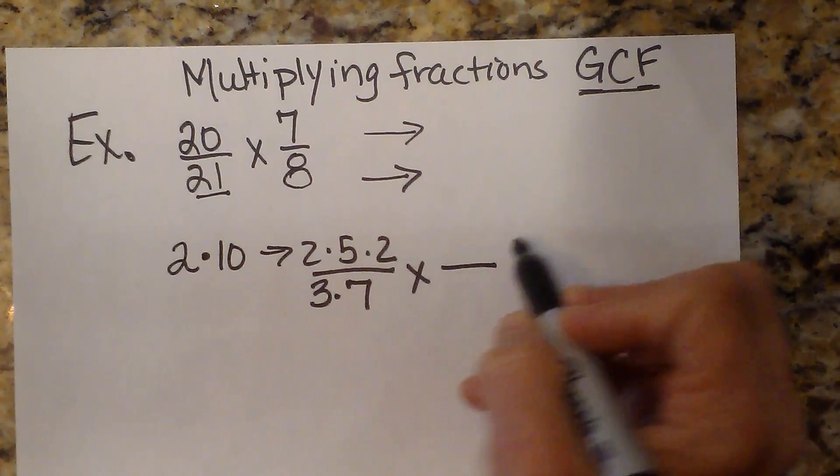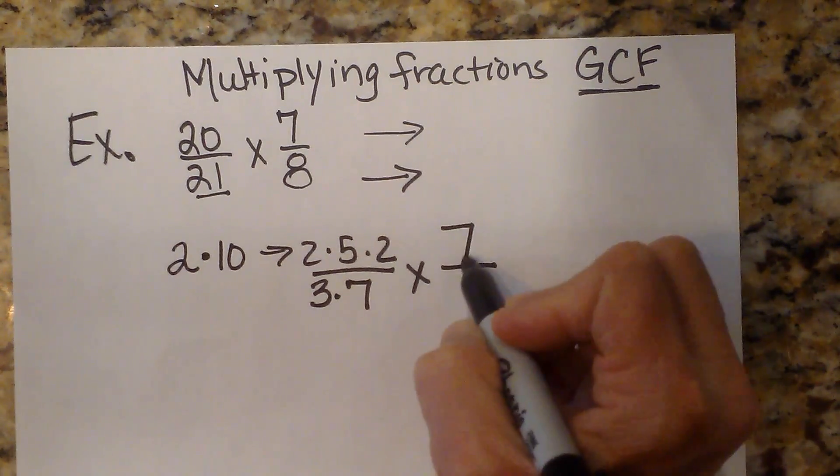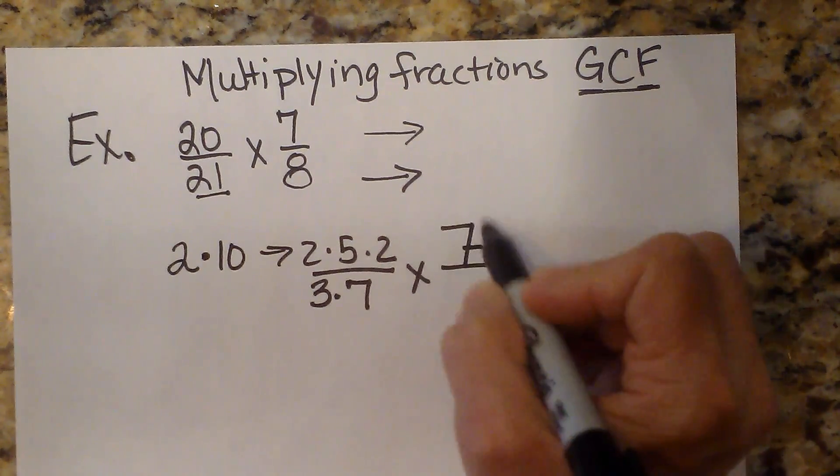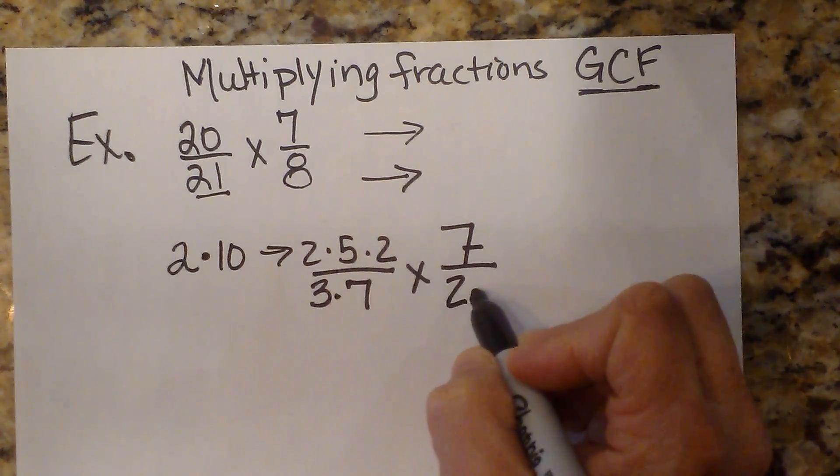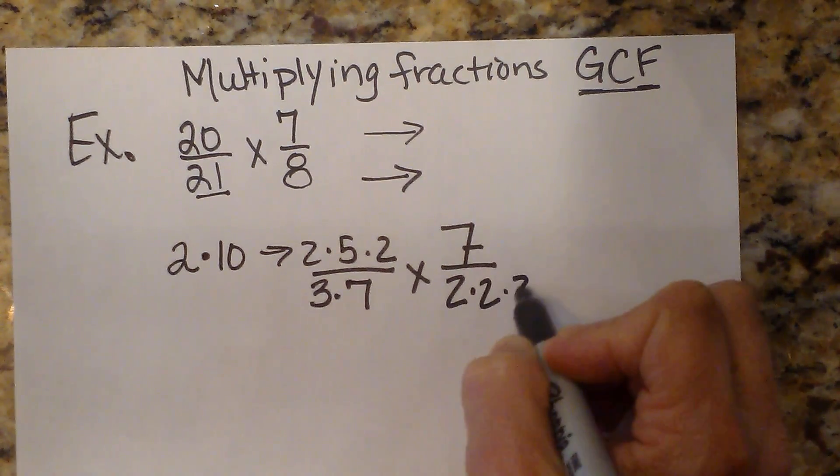Now I'm going to multiply that by 7, because 7 is prime. And then 8 factors down to 2 times 2 times 2.